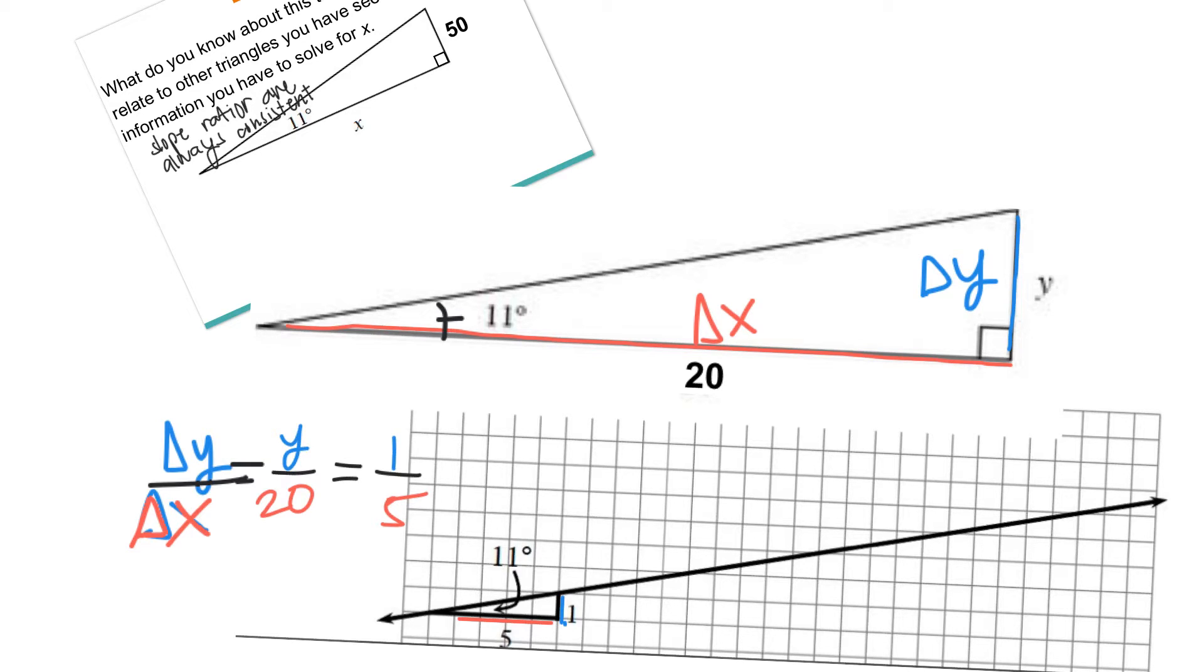In this case, this is from the do now. Remember, you know this over this because it is consistent - it has to be the same thing as this over this. It's kind of like if we're looking for similarity. Using this for the do now, we were able to know that 5Y equals 20, so Y equals 4.